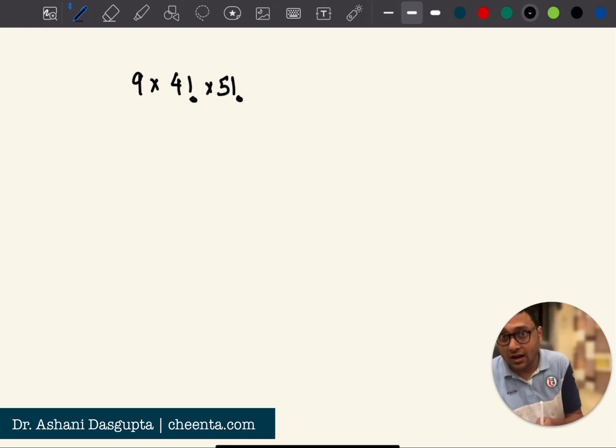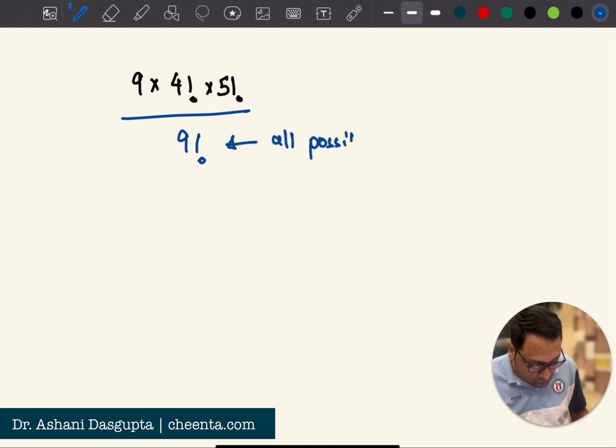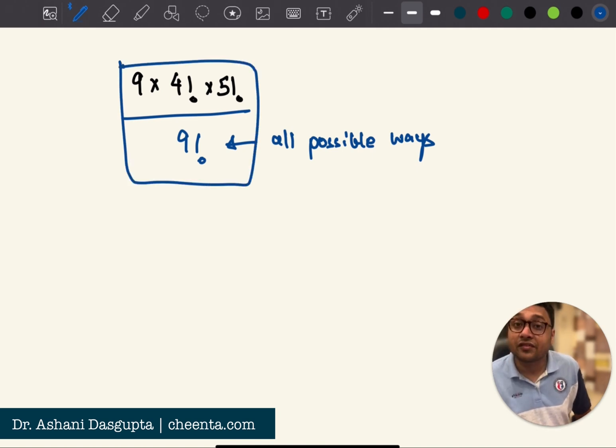Now, the question actually asks about the probability that sum of the numbers in every row and every column is odd. So to find the probability, you have to just divide it by nine factorial, which is all possible ways. Now, maybe you can tell me in the comment section, what is the simplified form of this fraction.